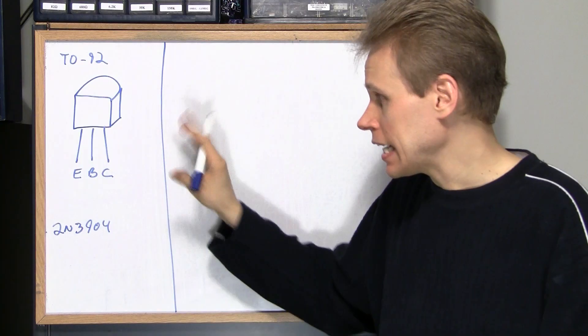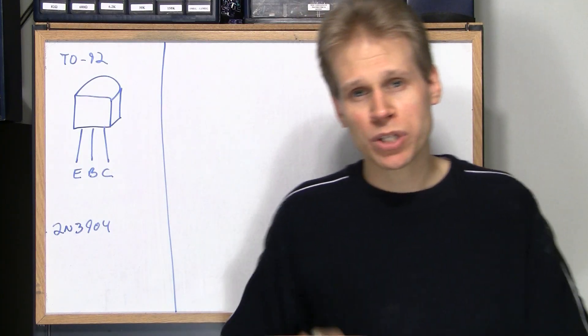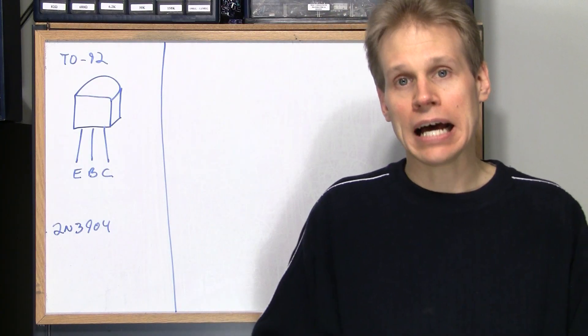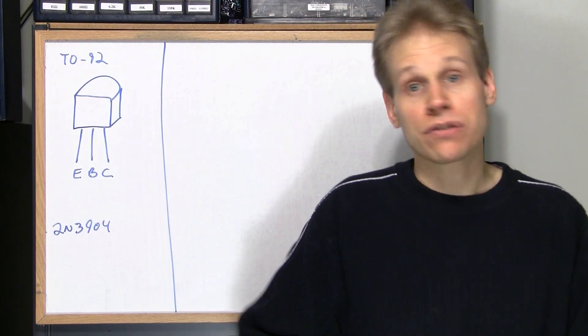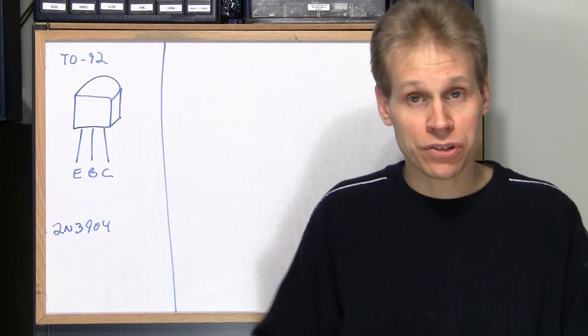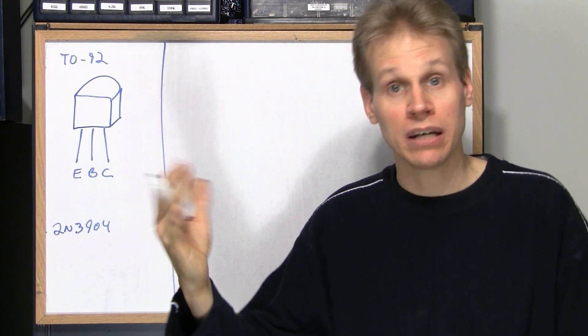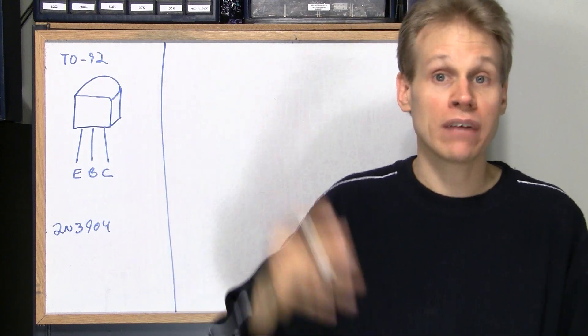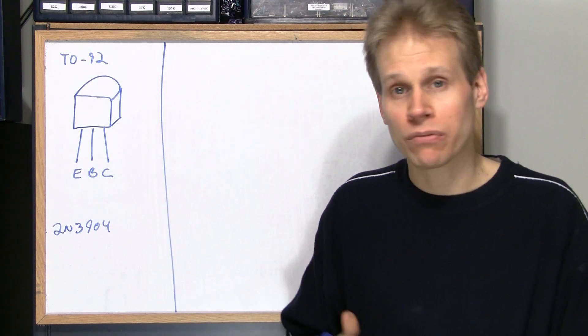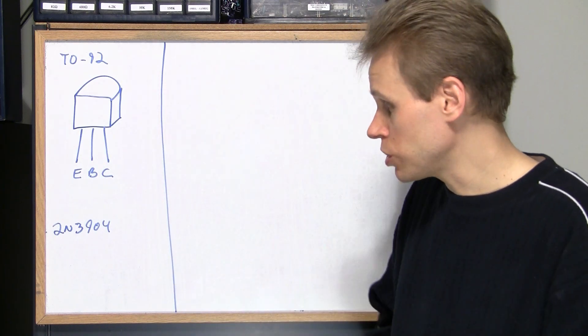There's a lot of things that hide under the 2N name though which kind of makes the 2N system really lack. A lot of things hide under there like FETs, you'll get an NPN transistor, a PNP transistor all hiding under 2N. That's one thing that really lacks about this whole 2N system.